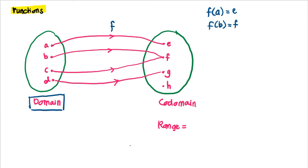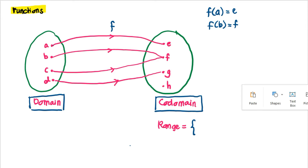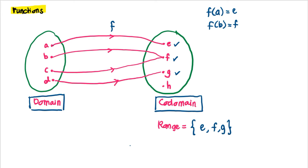The first set is called the domain and the second set is called the codomain. The range is the set of images of the objects. In this case we have images e, f, and g only — so h is not included in the range, but h is in the codomain.